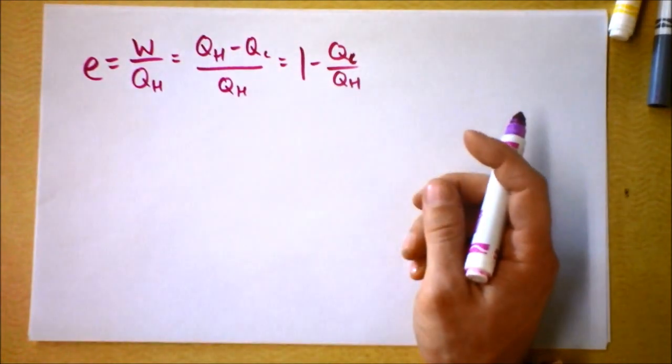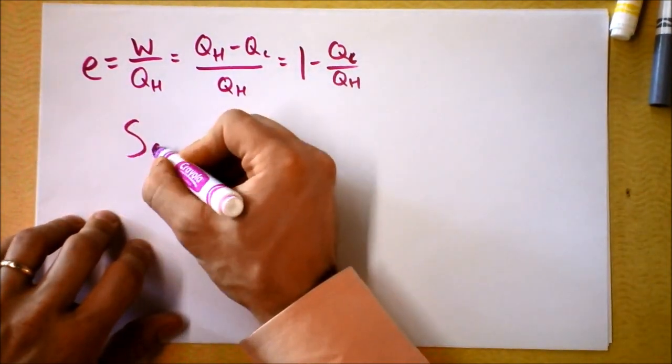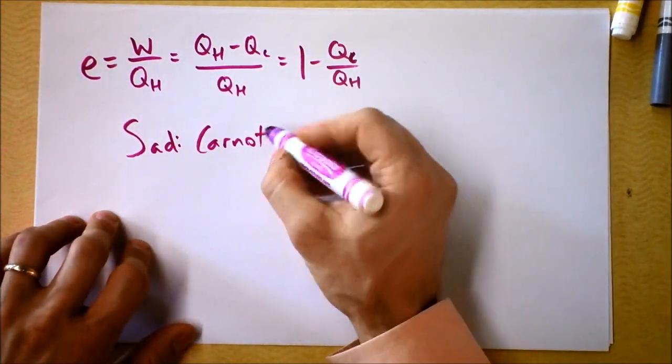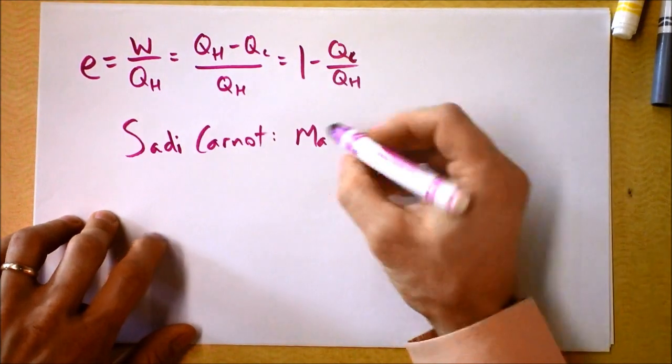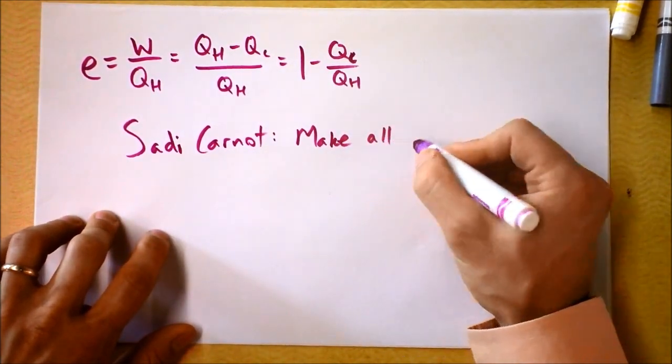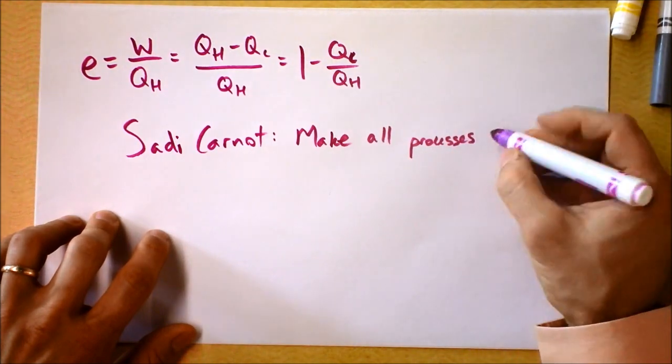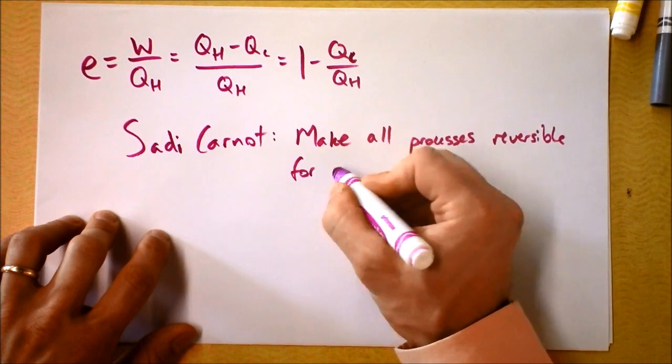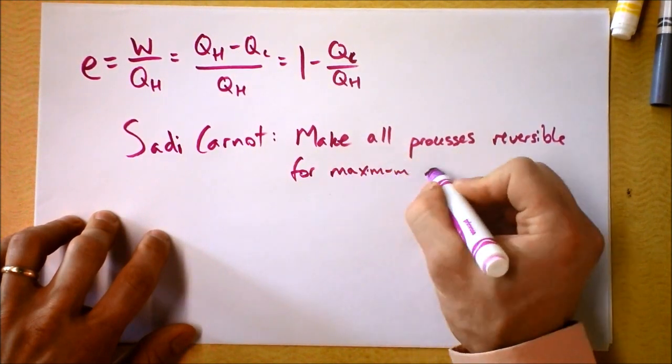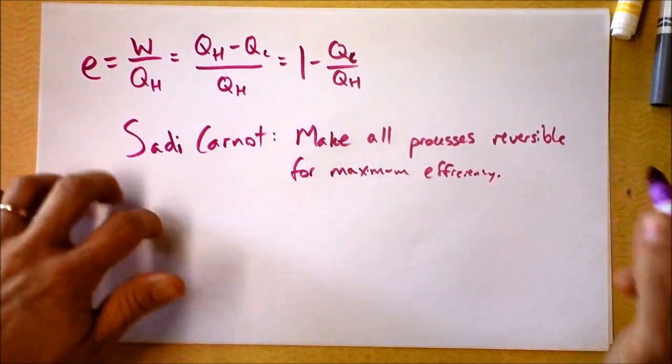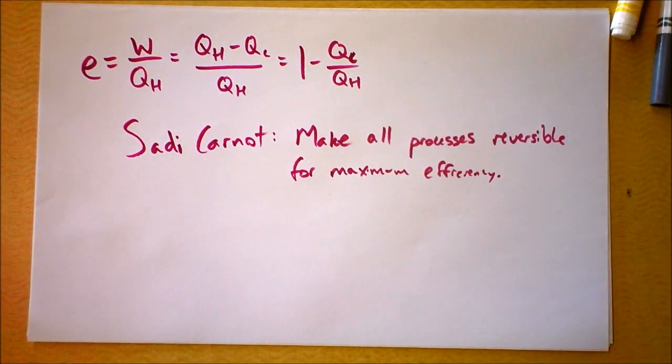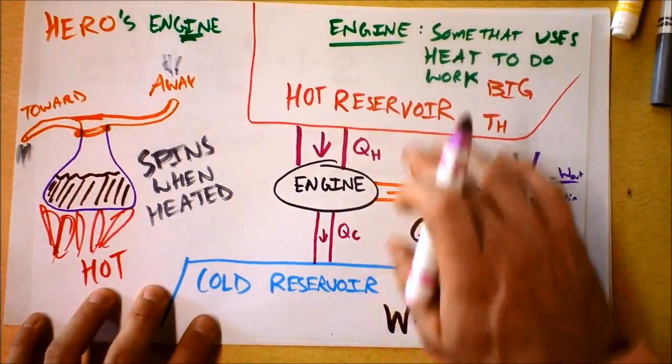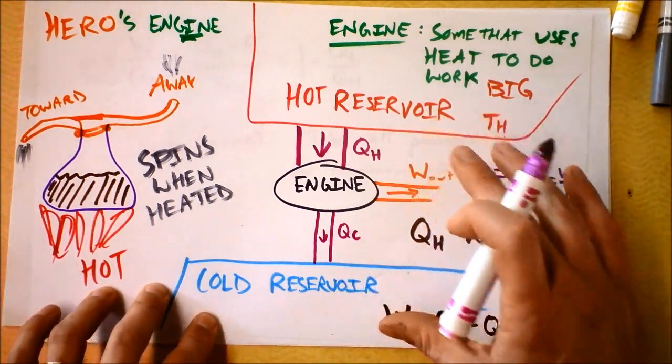And then there was this guy, his name was Sadi Carnot, and he was French. And he said, make all processes reversible for maximum efficiency. What we need to do to do that is to make sure that everything happens extremely gradually.